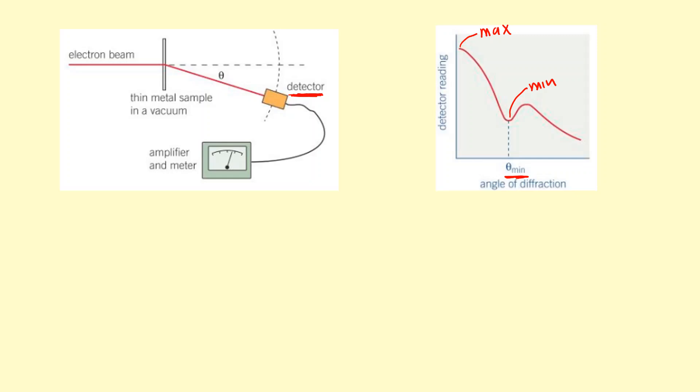The reason is, it turns out you can use this to figure out the radius of the nucleus. The radius of the nucleus times sine of the angle at which you get the minimum gives you 0.61 times the wavelength.